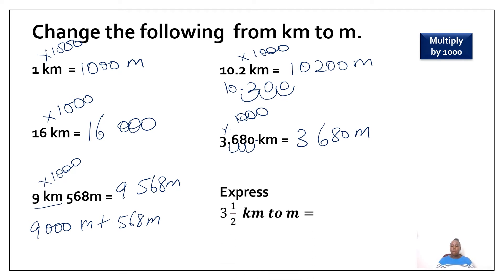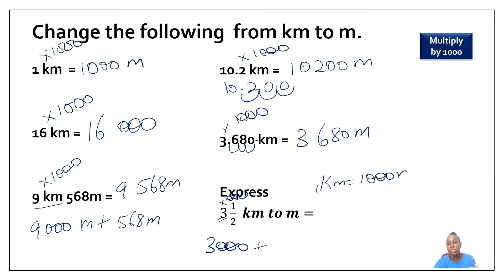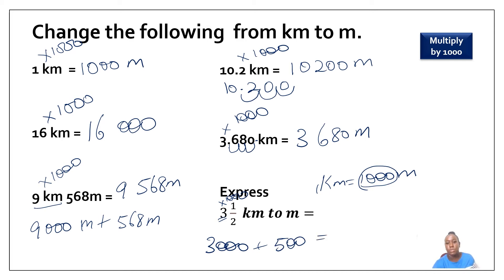Express three and a half kilometers to meters. How much is three kilometers in meters? I need to multiply three by one thousand, which is going to give me three thousand, plus what is one kilometer? One kilometer is equal to one thousand meters. So the question is: what is a half of one thousand? A half of one thousand would be five hundred. So three and a half kilometers is going to be three thousand plus five hundred, which will be three thousand five hundred.